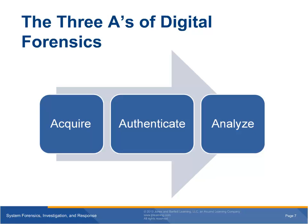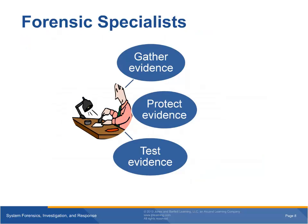This leads us to the three A's of digital forensics: acquire, authenticate, and analyze. We acquire evidence in a digitally sound method, we authenticate who created that evidence, and then we analyze it to see exactly what occurred, where, when, and how. This leads us to the role that forensic specialists play — it is their job to gather evidence, protect that evidence, control access to that evidence, and ultimately to test that evidence.